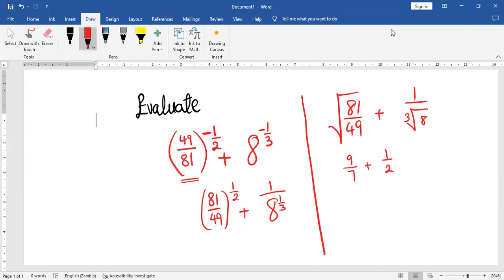So at this point, we have to find the lowest common multiple of these two numbers, which is 14. All right, 7 into 14 is 2, 2 multiplied by 9 is 18, plus 2 into 14 is 7, 7 multiplied by 1 is 7.